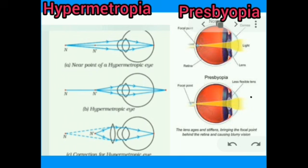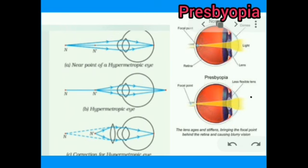I think you all understood the defects of the eye. We discussed what is meant by myopia, what causes it, and how we can rectify it. Then we discussed hypermetropia and presbyopia in the same way. All of you, draw the ray diagrams and learn them well. Thank you.